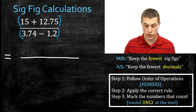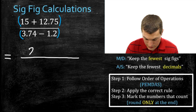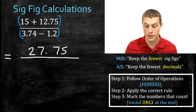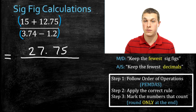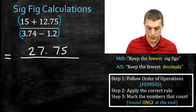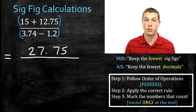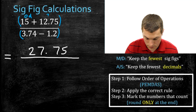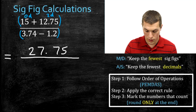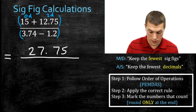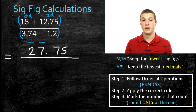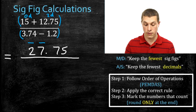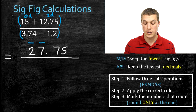When I do 15 plus 12.75, that gives me 27.75. Now I just added, so I need to follow the rules for addition — keep the fewest number of decimal points. 15 has zero decimal points and 12.75 has two, so I keep the fewest, which is zero. I mark the ones that count: only the two and the seven count as significant. That number should be considered to have zero numbers past the decimal and two significant figures. But I don't round yet — only at the end.